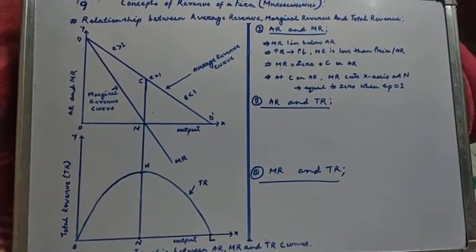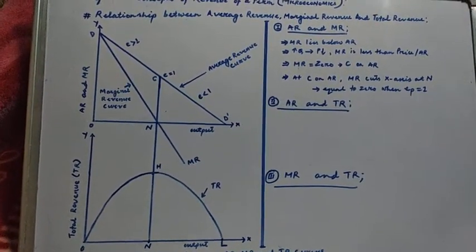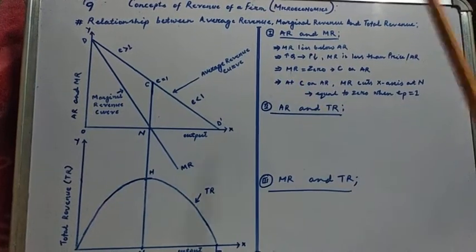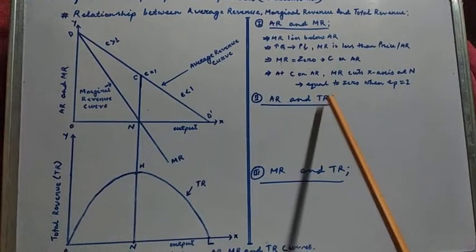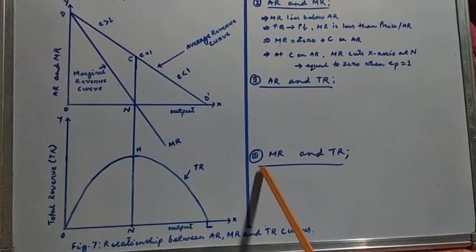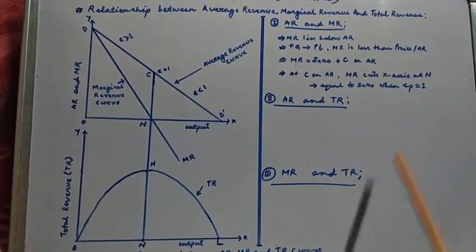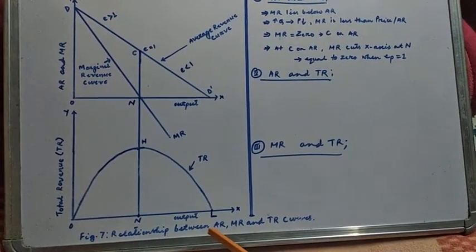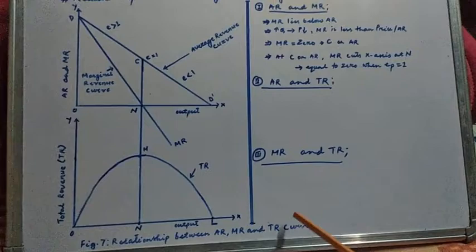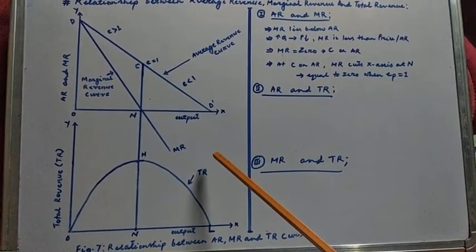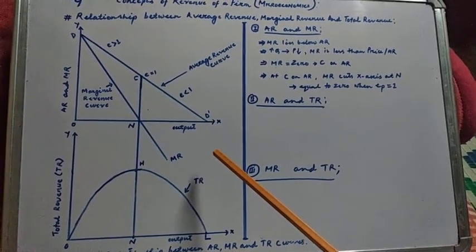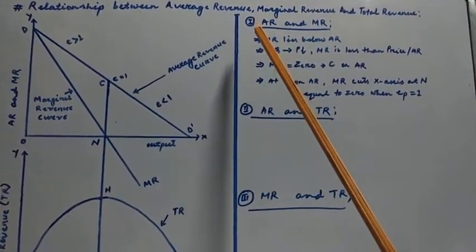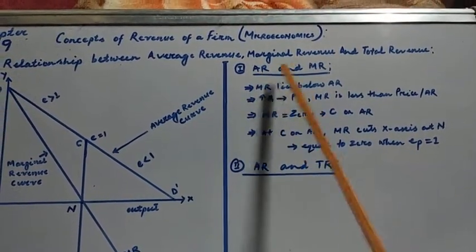In today's class we will discuss in detail: first, the relationship between average revenue and marginal revenue; second, the relationship between average revenue and total revenue; and third, the relationship between marginal revenue and total revenue. This is graphically presented in figure 7, showing the relationship between average revenue, marginal revenue, and total revenue curves.